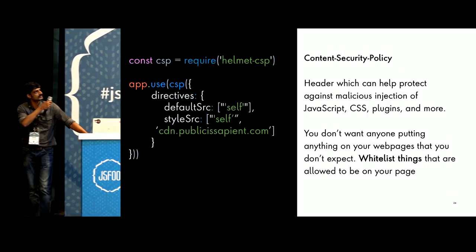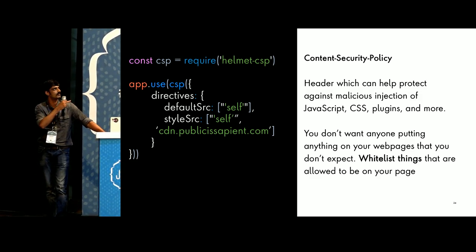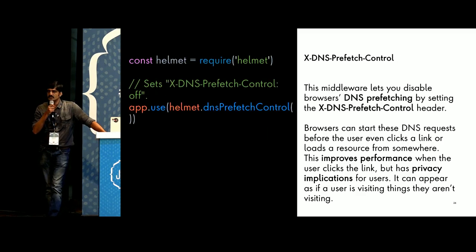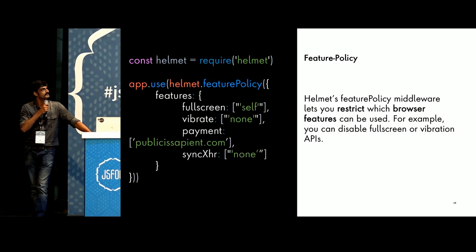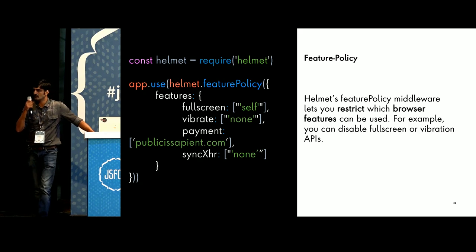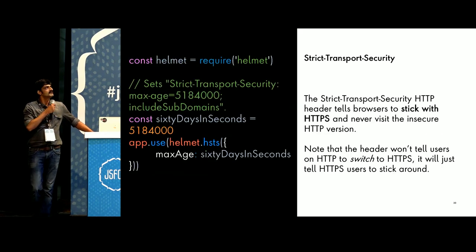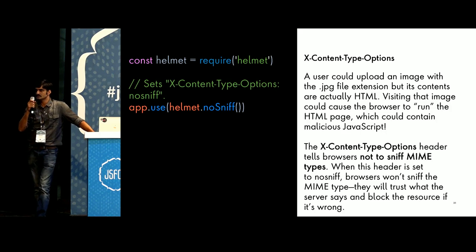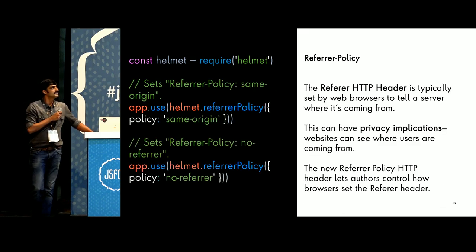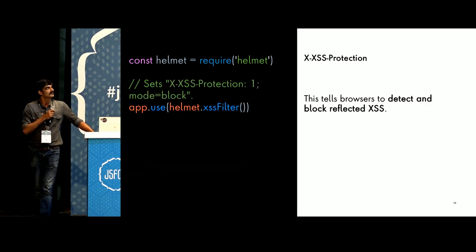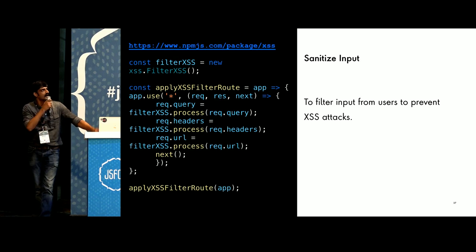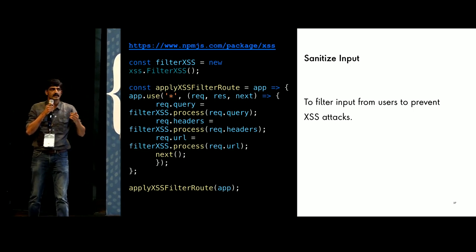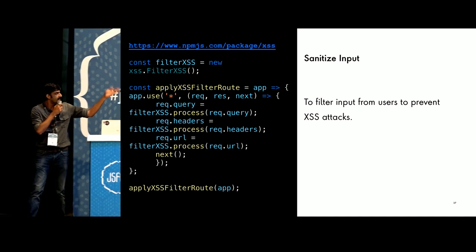These details are part of the slides — I will share the QR link and you can download them. The headers covered include: content security policy, permitted cross-domain policies, DNS prefetch control, Expect-CT for certificate transparency, feature policy controlling which browser features can be used, X-Frame-Options, strict transport security to stick to HTTPS only, content type options so browsers do not sniff your data and MIME type, referrer policy for where the user is coming from, and XSS protection. For input sanitization at the Node layer, you can use the XSS package, which provides more flexibility and lets you sanitize query headers, URLs, and so on.